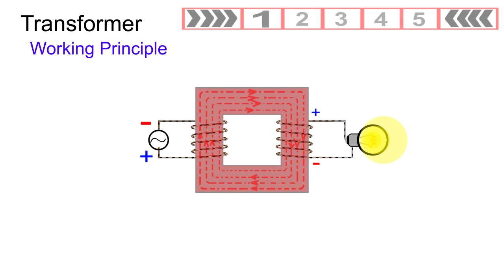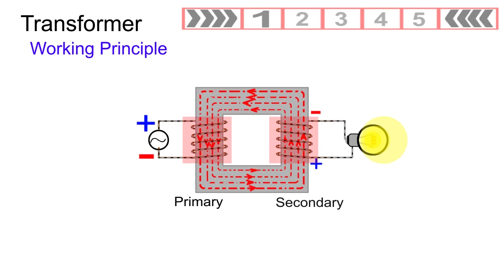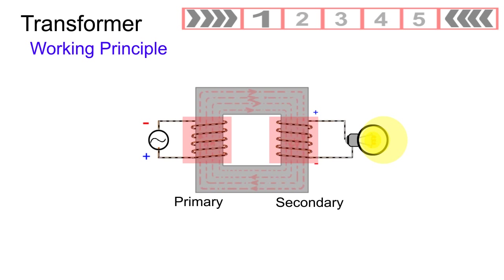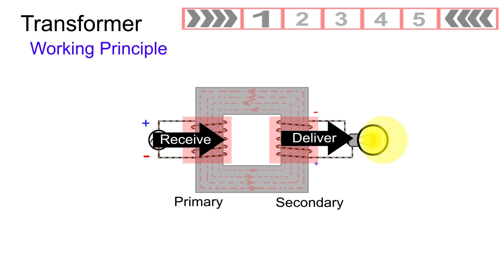In a transformer, either winding may be the primary, the other being the secondary, depending upon which winding receives and which delivers energy.